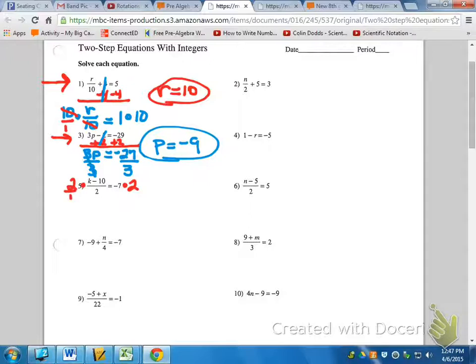That 2 is over 1, and that way the 2s cancel, leaving me with K minus 10 on the left. Looks much better, much neater. Negative 7 times 2 is negative 14.